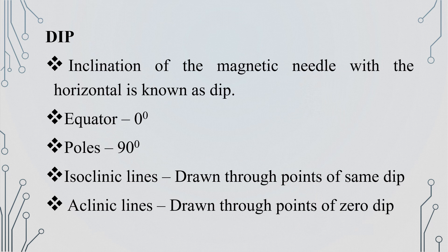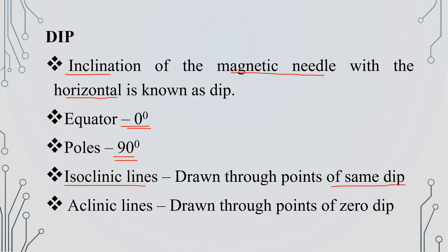Next is dip. Dip is the inclination of the magnetic needle with the horizontal. At the equator, dip values are equal to 0°, and at the poles, dip values are 90°. Points of equal dip are called isoclinic lines.